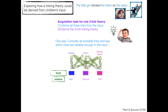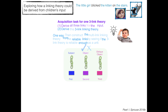Here's how I think it could work for the first part, when you're just trying to get the individual links from the input: consider all possible links out there and see which ones are reliable enough in the input to warrant building a theory from. Maybe that's these three, given what we know about how languages work. And then you're going to have to derive the particular three-link linking theory — construct it from the reliable links and then see if the three-link theory as a unit is reliable enough.